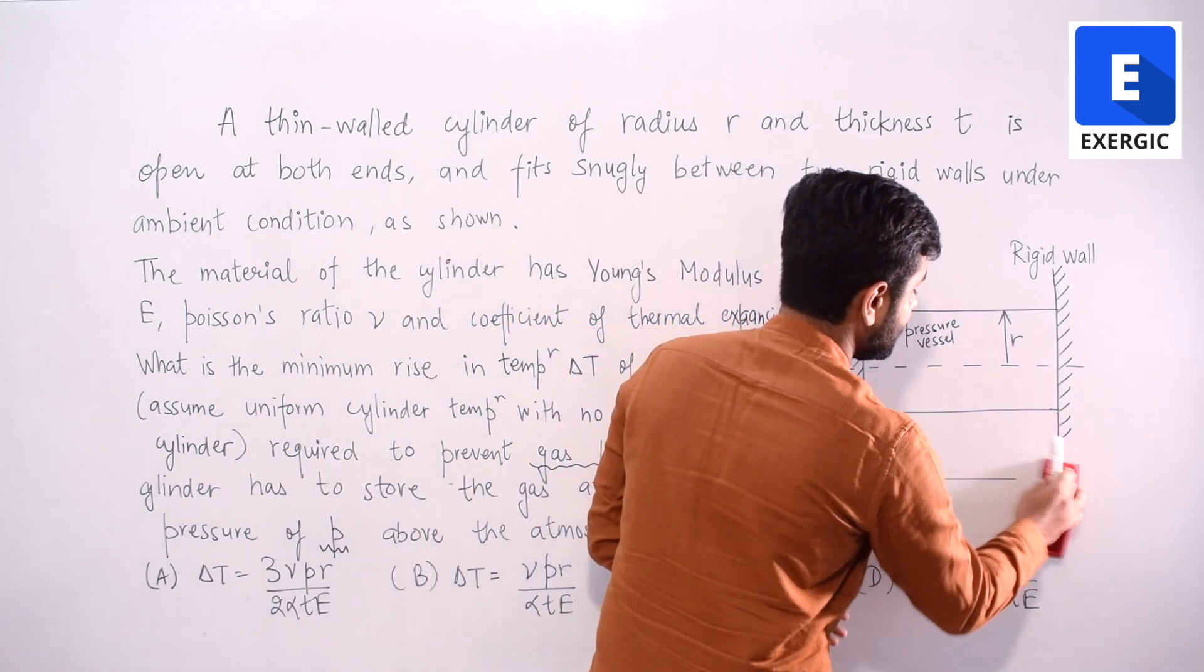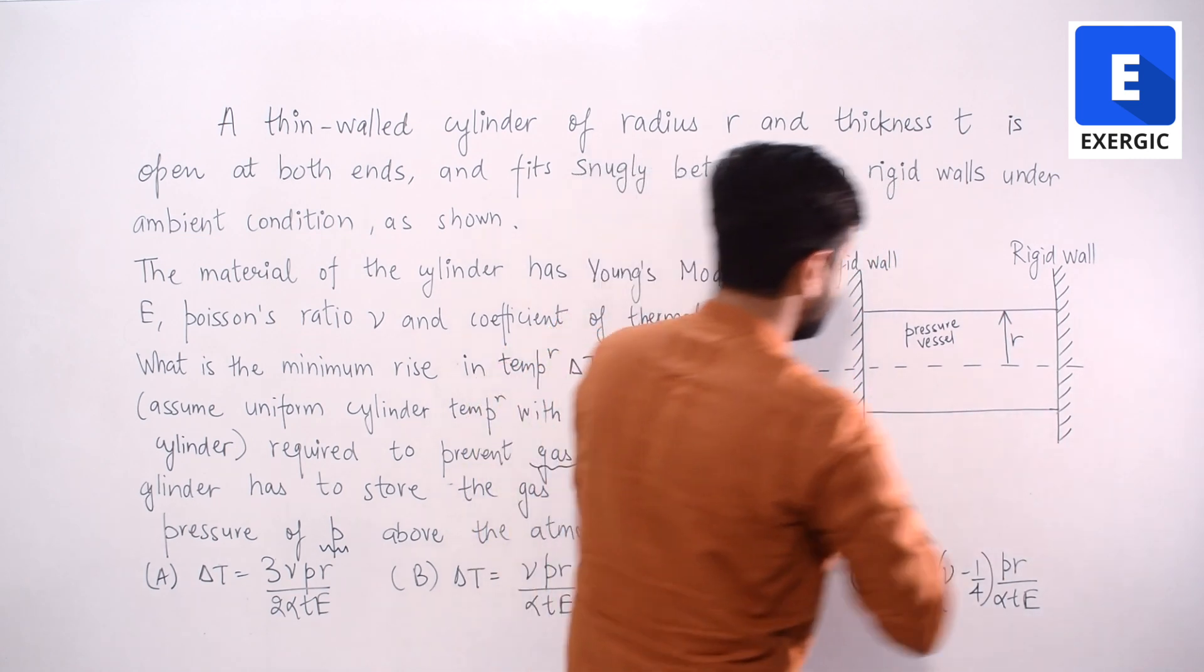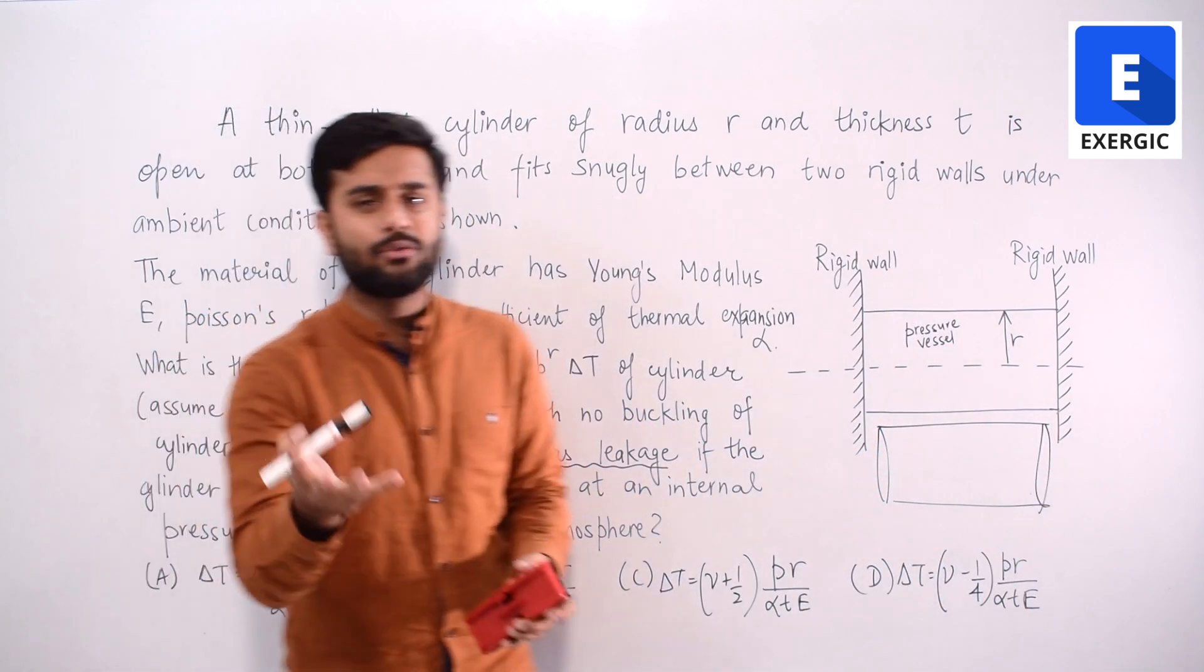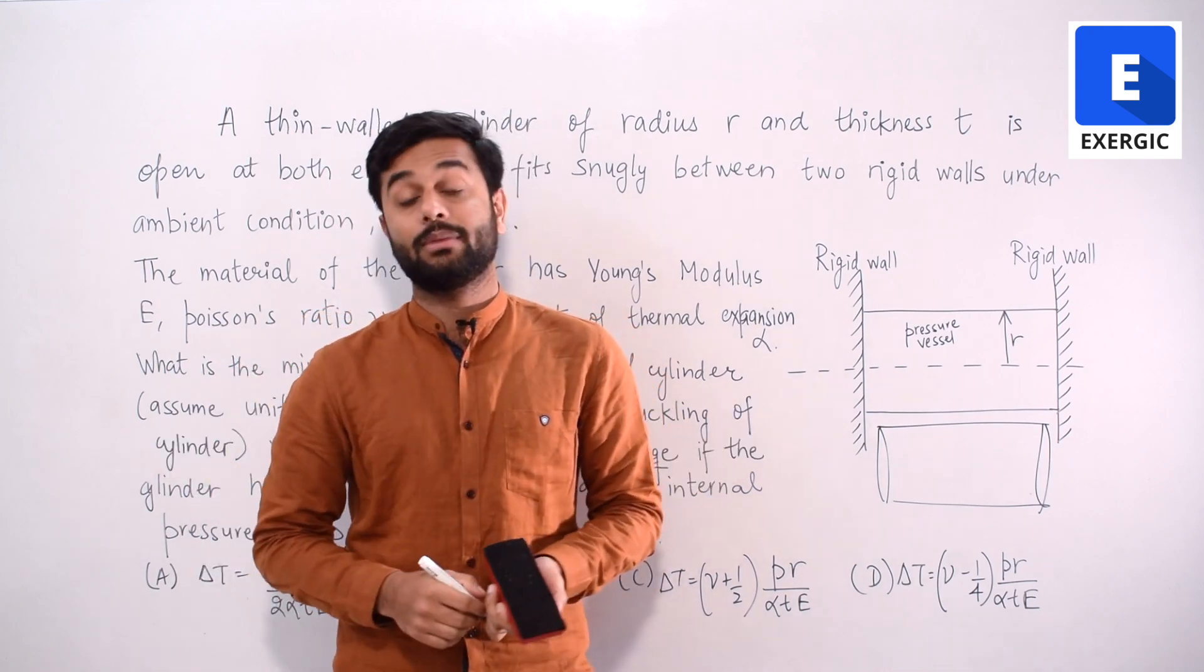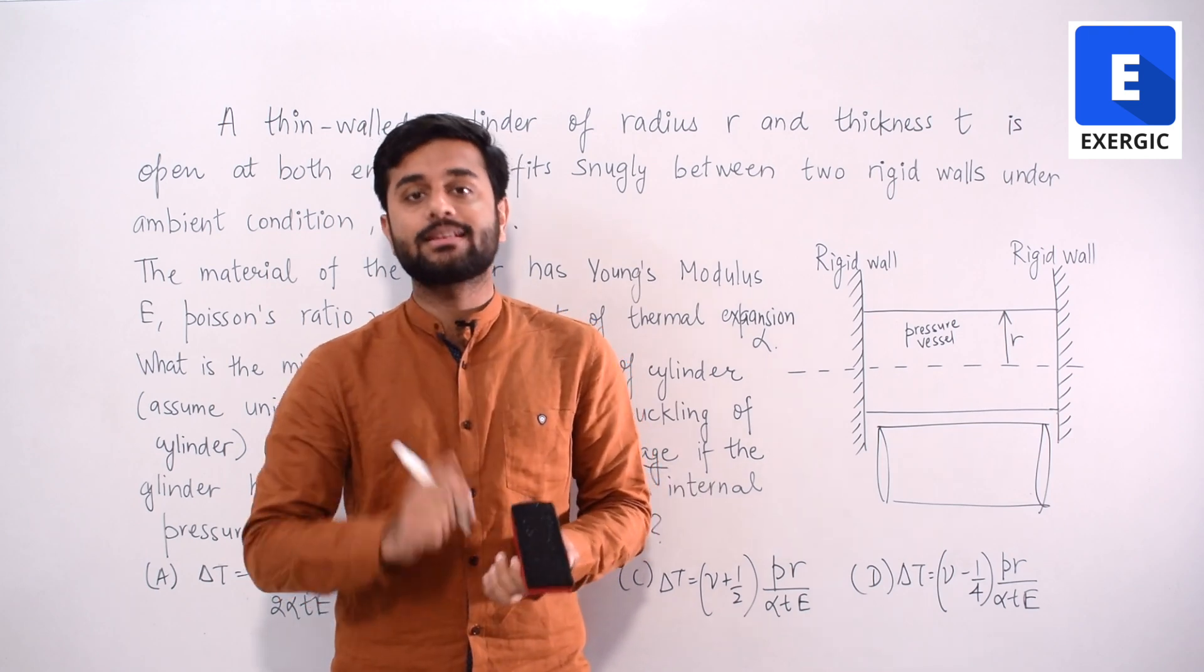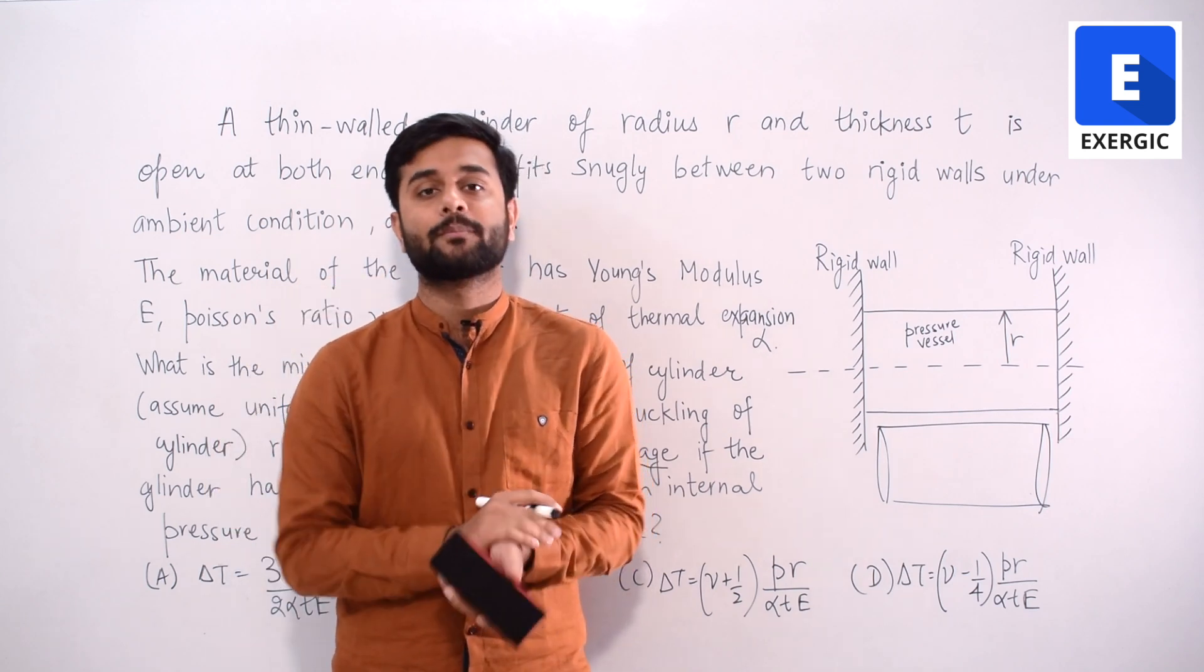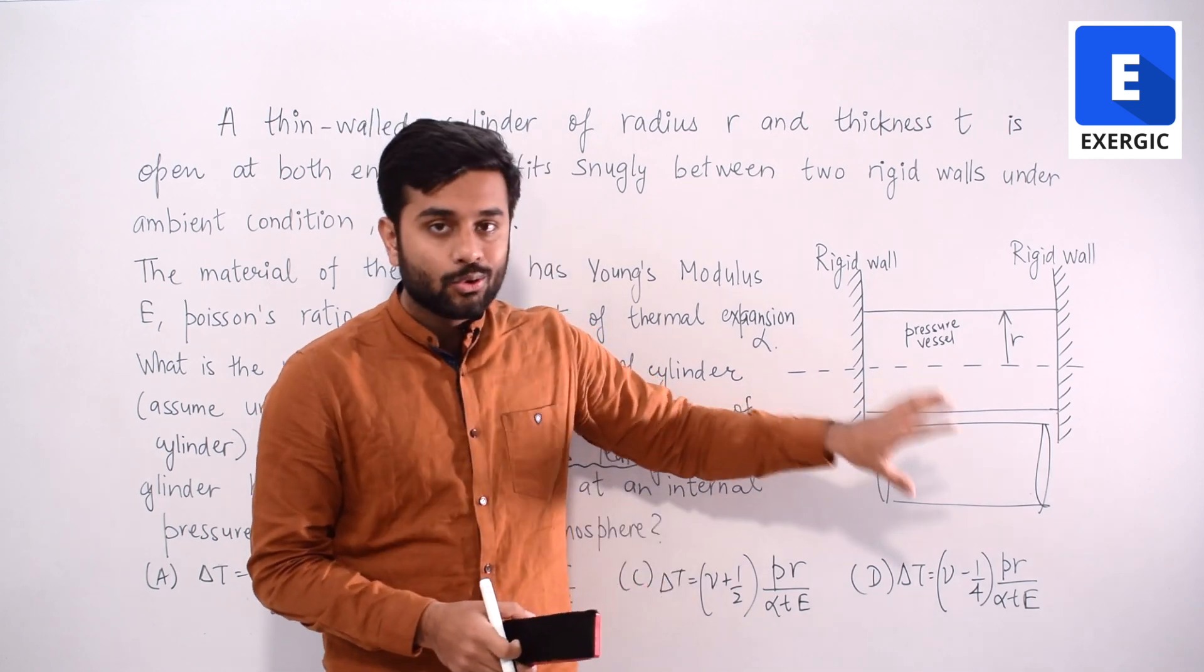Now this condition you have to assume that upon increasing the temperature is it possible that a situation like this will occur - that its length will reduce. Generally what do you have? Generally upon heating it the length generally increases. But this is a pressure vessel. There are two different stresses acting generally in case of closed ones - the longitudinal and the circumferential. What will be the stresses acting in this case? Let's look at that first.